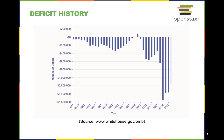Military expenditures, entitlement programs, and the decrease in tax revenue, coupled with increased safety net support during the Great Recession, are major contributors to the dramatic increases in the deficit after 2008. A rising budget deficit may result in a fall in domestic investment, a rise in private savings, or a rise in the trade deficit.